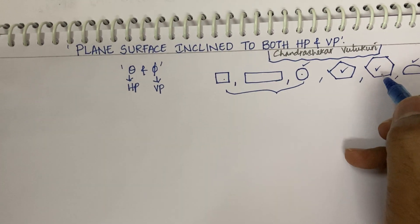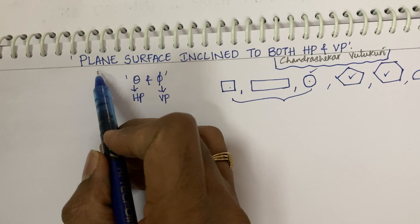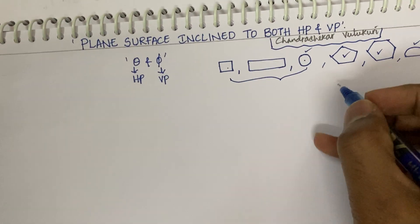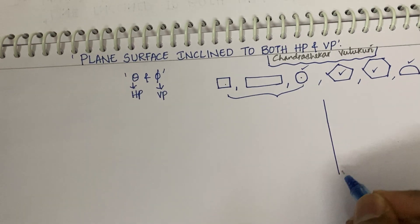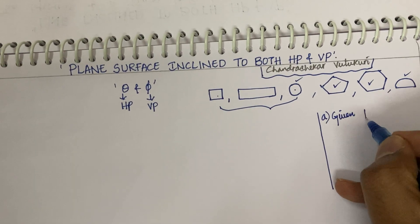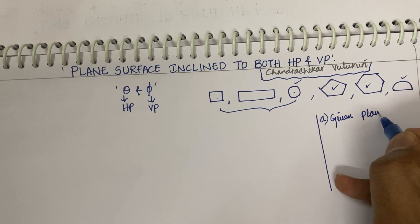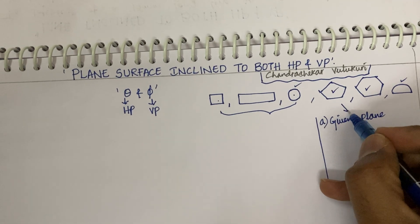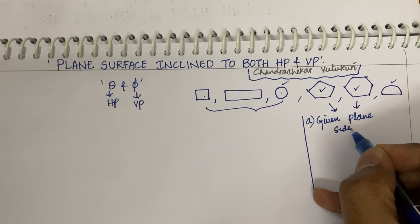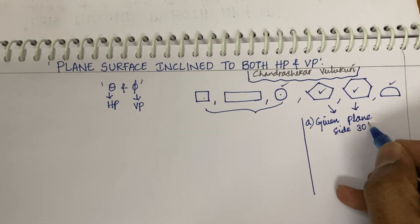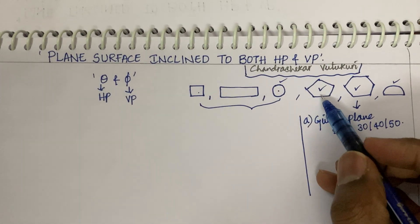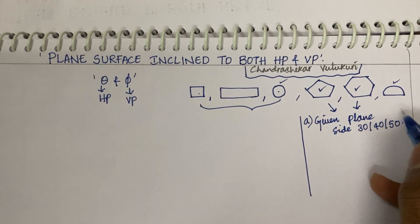But what if a pentagon or hexagon is asked to work out a plane surface inclined to both HP and VP? The first and foremost thing you need to look at in the question is: what is the given plane — whether it is a pentagon or a hexagon? After that, what is the side of the pentagon? Let it be 30, 40, or 50 mm. I have already uploaded a video on regular construction of pentagon and hexagon in this channel.